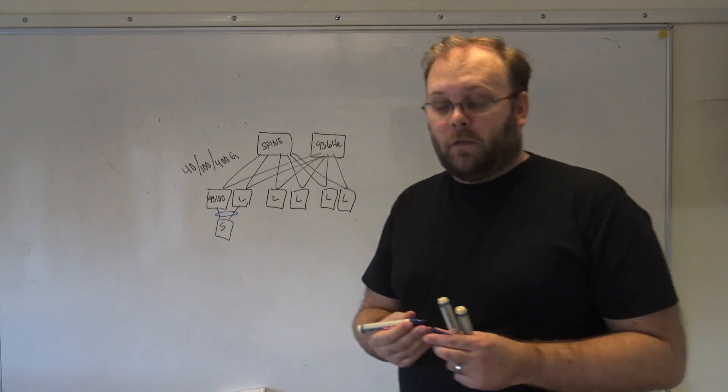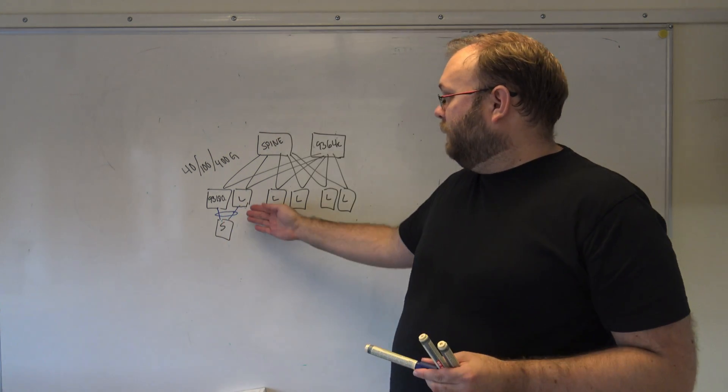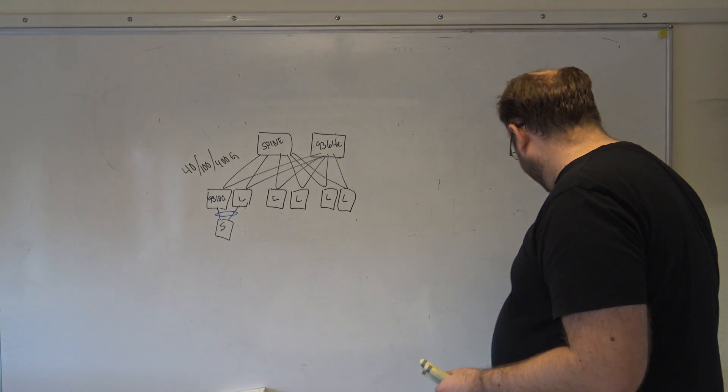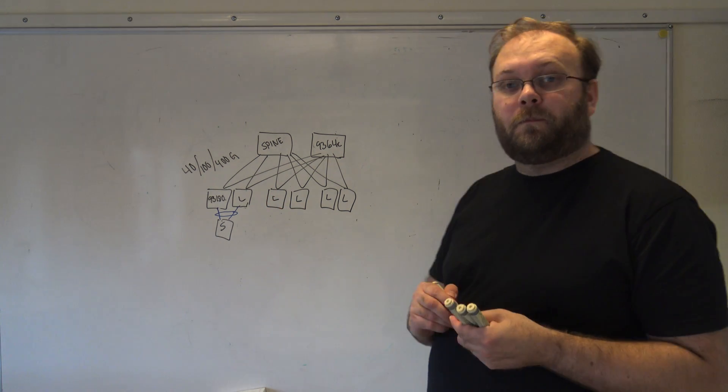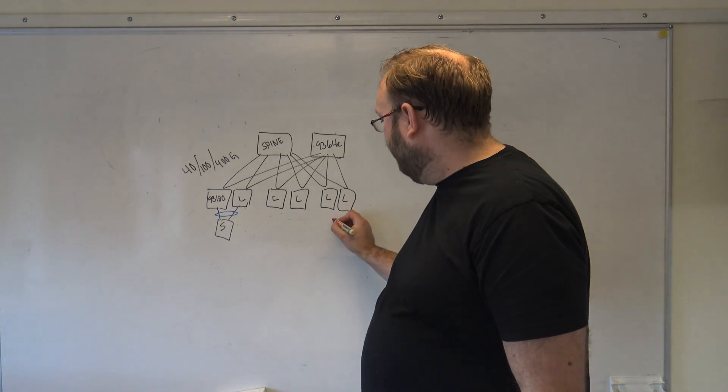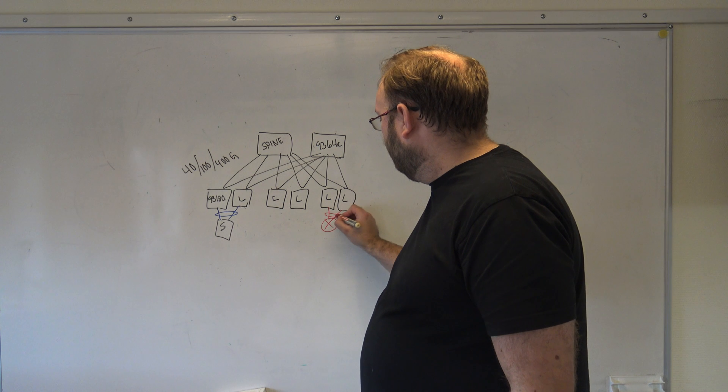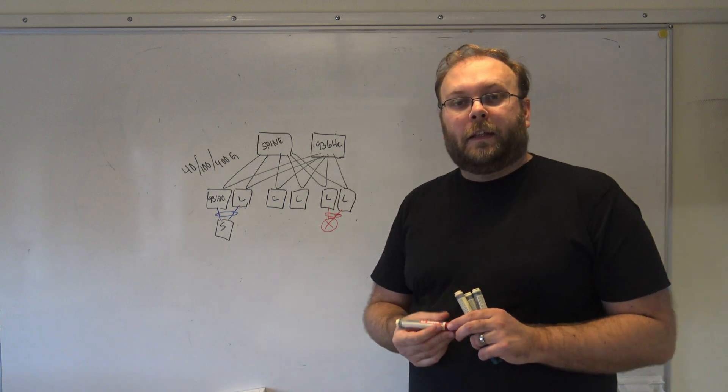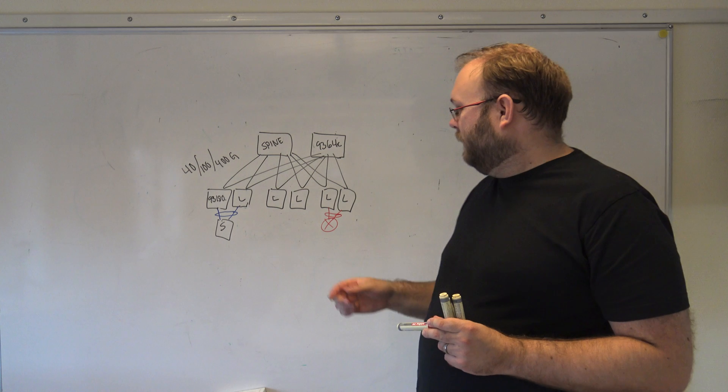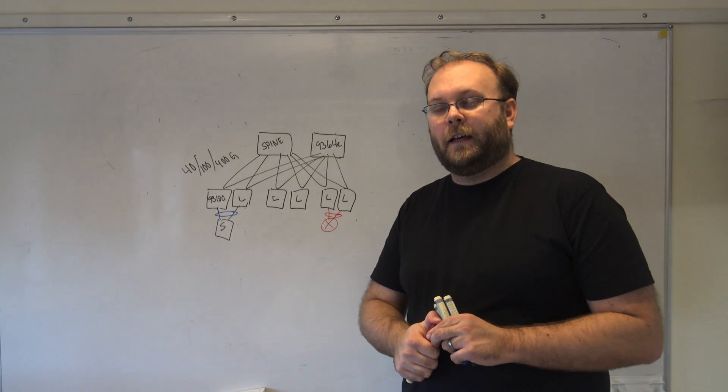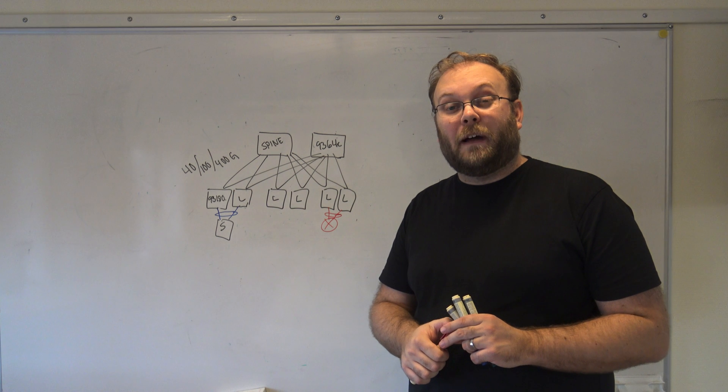And now we have a port channel, so this is what you call a compute leaf. And then if you have for example a router, let's do it red. That is normally connected to a border leaf, so here is where you have your L3 out if you're running routing within the fabric.